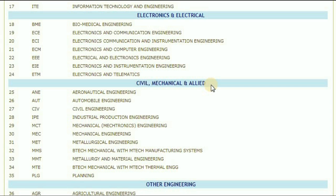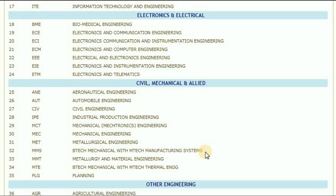Coming to civil, mechanical and allied. ANE — aeronautical engineering. AUT — automobile engineering. CIB — civil engineering. IPE — industrial production engineering. MCT — mechanical mechatronics engineering. MEC — mechanical engineering. MET — metallurgical engineering. MMS — BTech mechanical with MTech manufacturing systems. MMT — metallurgy and material engineering.